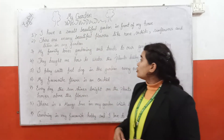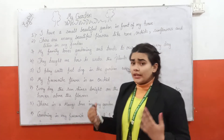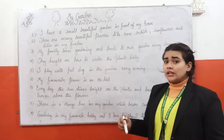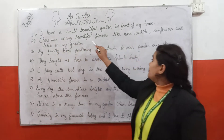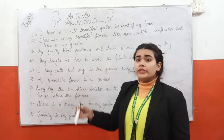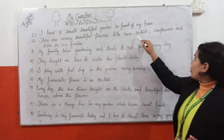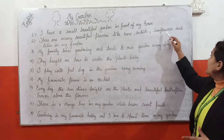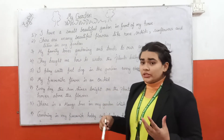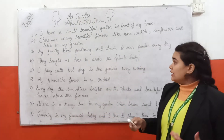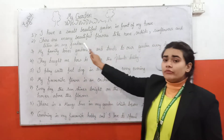My Garden. So the first point is: I have a small, beautiful garden in front of my house. In front of my house, there are many beautiful flowers. There are a lot of beautiful flowers which attract people towards them, like rose, orchids, sunflowers, and lilies in my garden. These are the names of flowers which we usually grow in a garden.